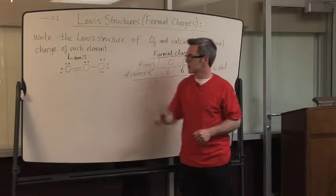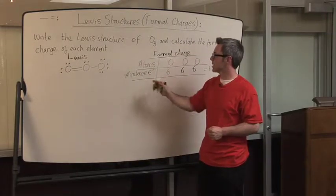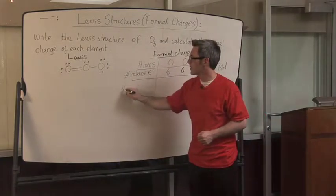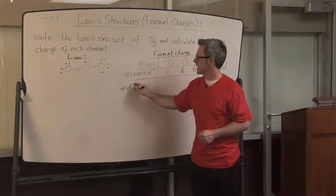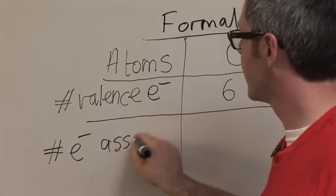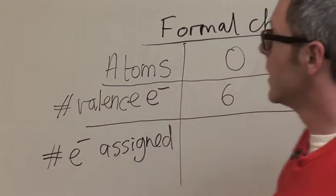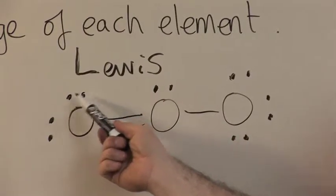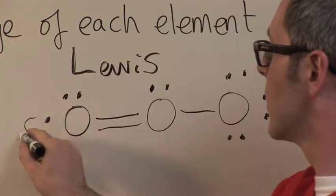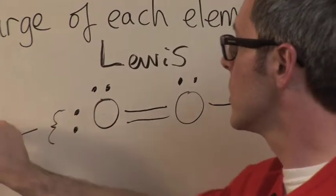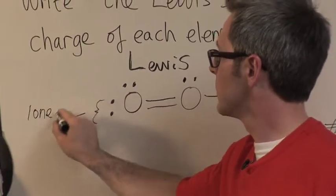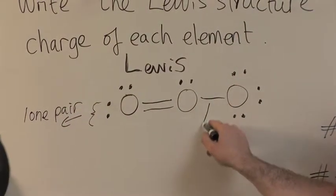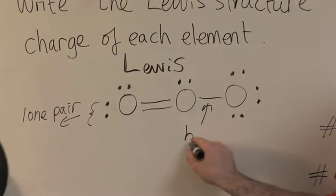Now this is a happy structure or a stable Lewis structure. Now I can complete the next line of the formal charge table, which is I count the number of electrons assigned. To do this, you allocate every dot or lone pair. So these dots are called lone pair electrons.